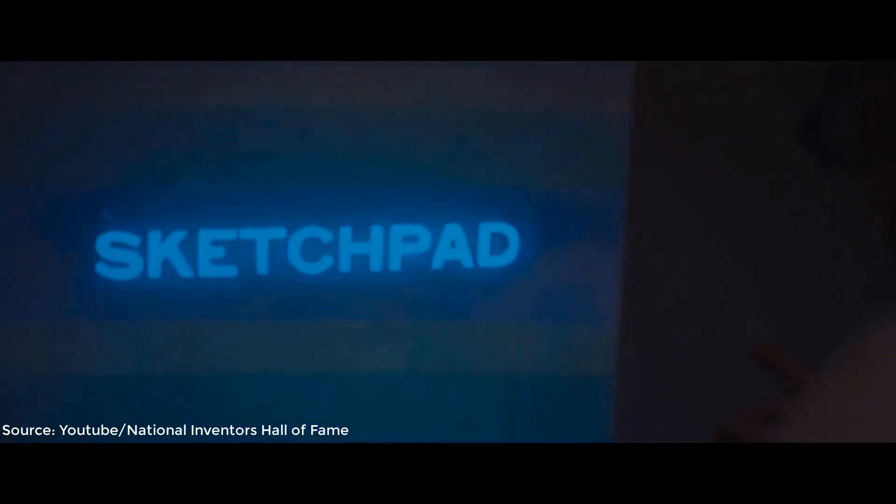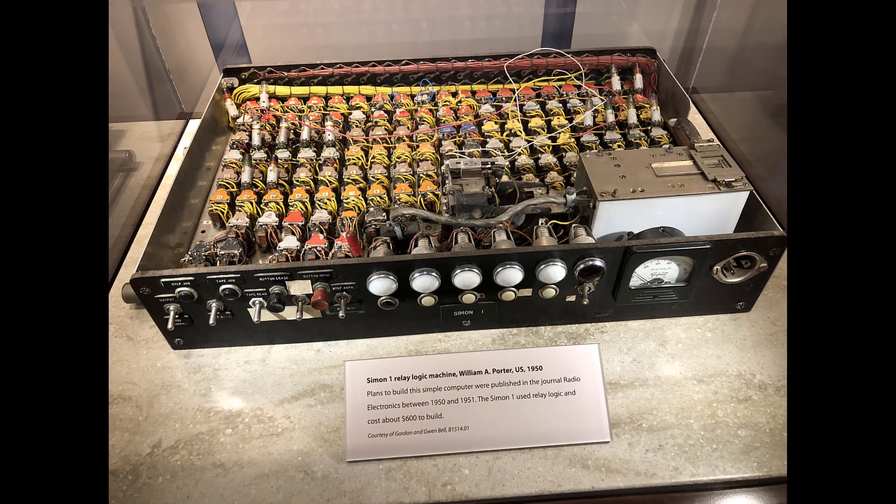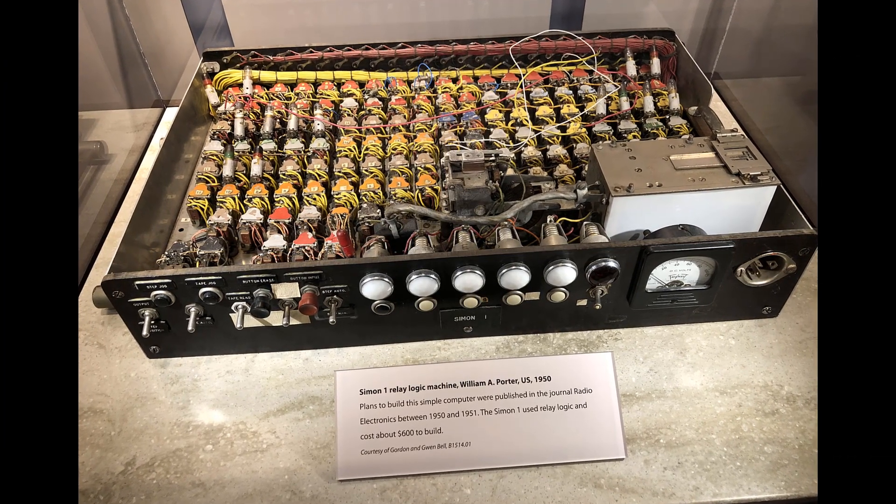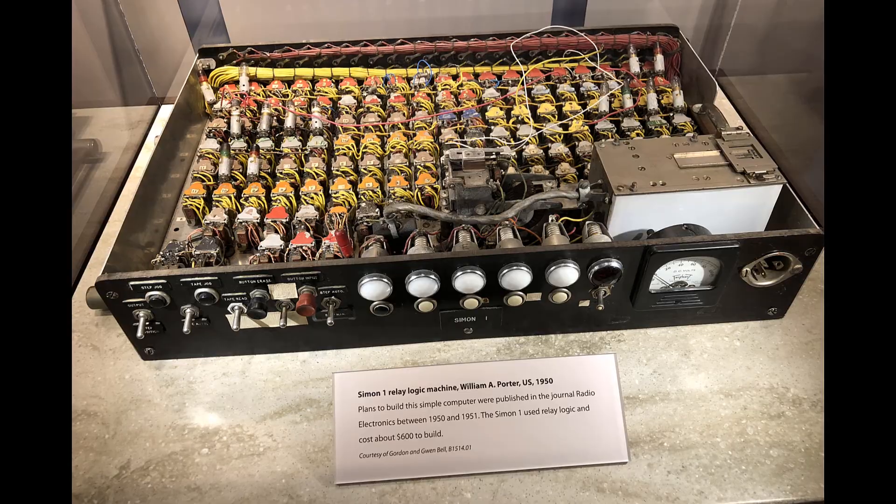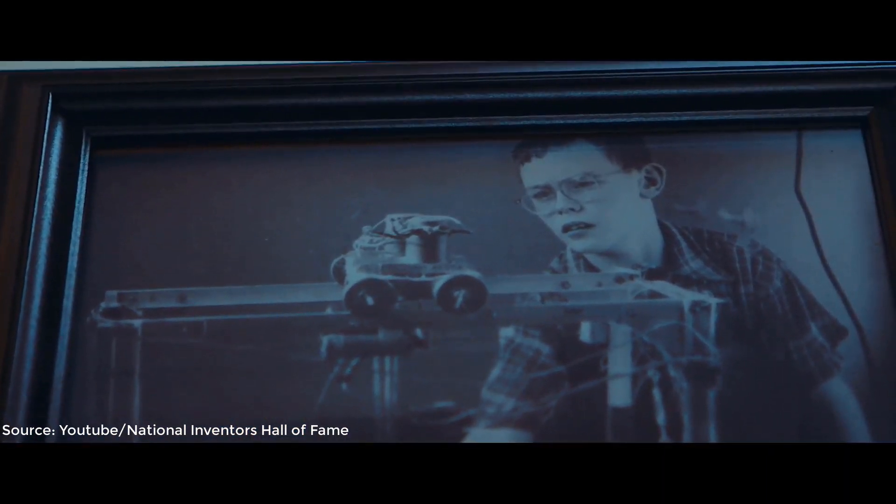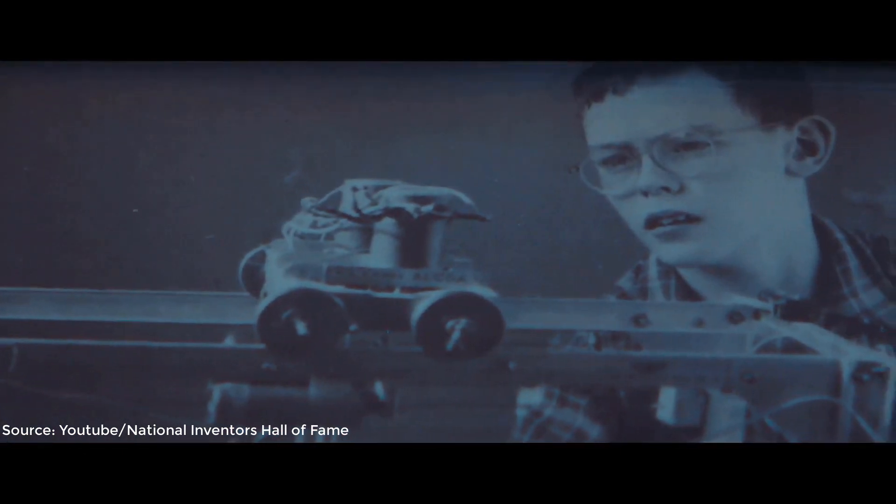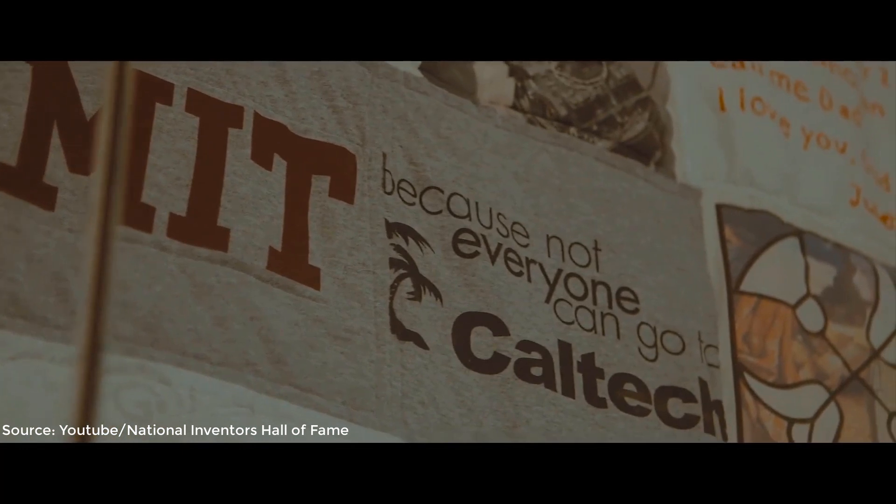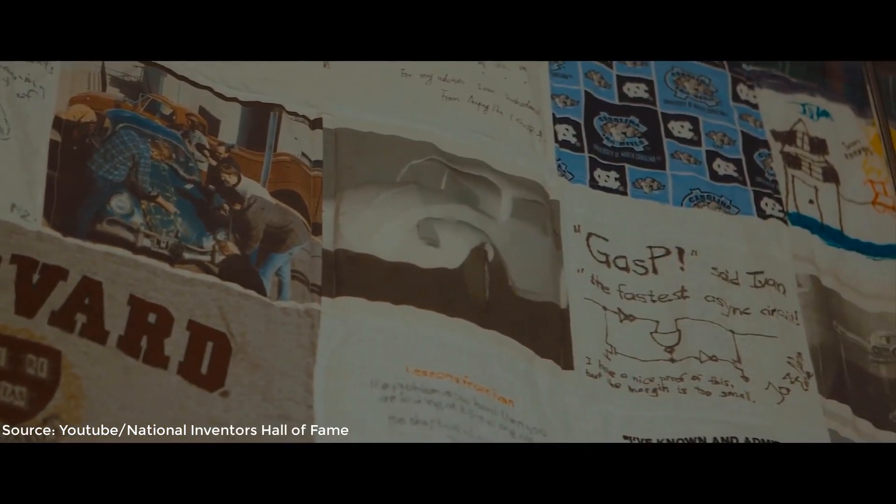Ivan's first computer experience was with the famous computer Simon by Edmund Berkeley, and his first big computer program was to make Simon divide. Sutherland went on to study at Carnegie Mellon University where he earned a bachelor's degree in electrical engineering, and then he went on to earn an MS, also in electrical engineering, from the California Institute of Technology.